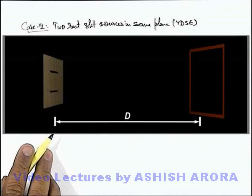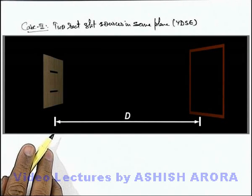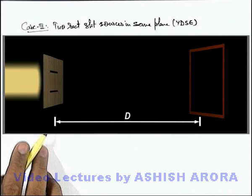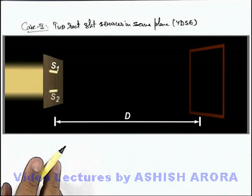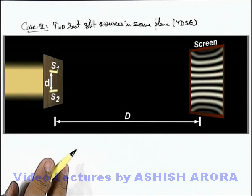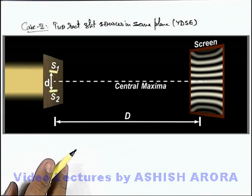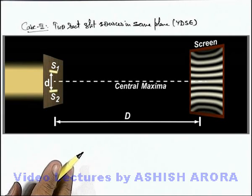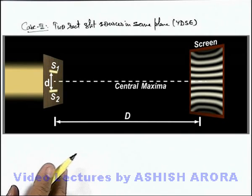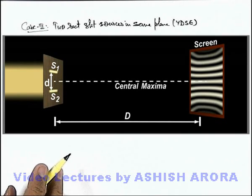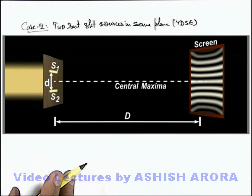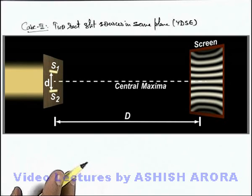Here if we look at Young's double slit experiment, when a light beam is incident on the slit sources, an interference pattern is obtained on the screen. In the central region of the screen, the interference fringes are straight, alternate bright and dark, and equidistant from each other. But at the edges where light is coming from the 2 slits, the fringes are getting approximately hyperbolic in shape, because the path difference at point P will remain the same everywhere.